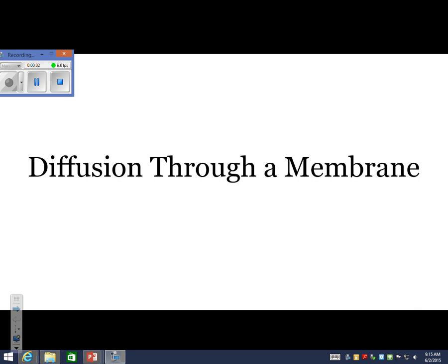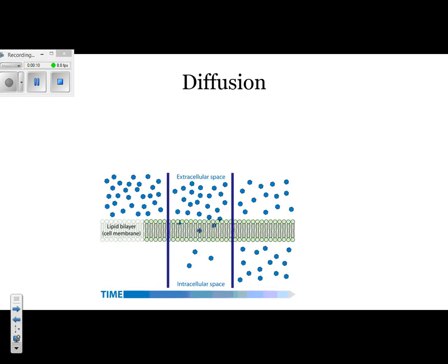The first lab we did was diffusion through a membrane. Here are the major points that you need to know. The first thing we should know is what the definition of diffusion is. Diffusion can also be referred to as passive transport.